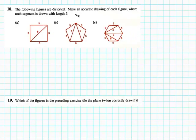The following figures are distorted. Make an accurate drawing of each figure where each segment is drawn with length five. Well here, if I have a triangle here and each length is five, that has to be an equilateral triangle, right? And then put another triangle back to back with it and it's going to look something like that. And this is like three equilateral triangles. So I have one here, and another one here, and another one here.